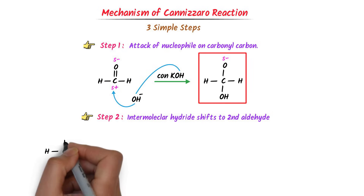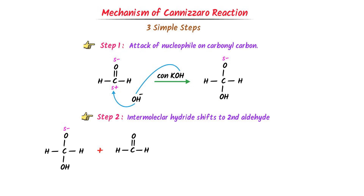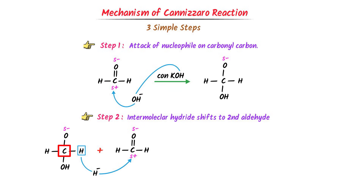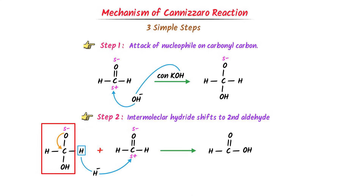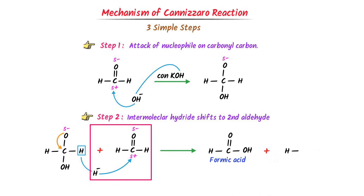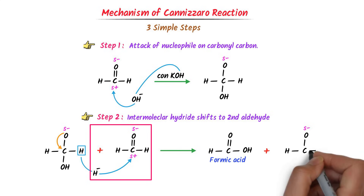The second step is an intermolecular hydride shift to the second aldehyde. I place the anion here and bring the second molecule of aldehyde. Oxygen is more electronegative — partial negative charge appears on it, partial positive charge appears on the carbon. The hydrogen comes out from the anion as a hydride. The double bond shifts to the carbon, giving H-C(=O)-OH, known as formic acid. The hydride then attacks on the carbon of the second aldehyde, giving H-C bonded to oxygen with a partial negative charge, with the hydride attached.